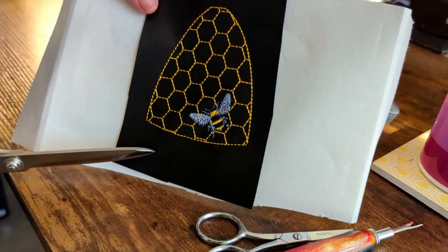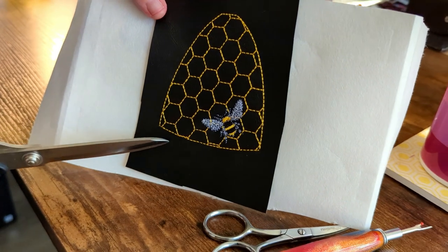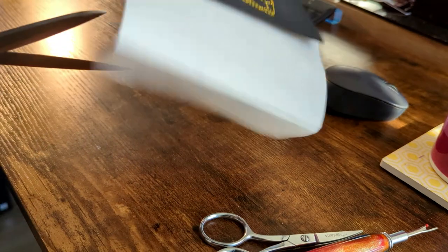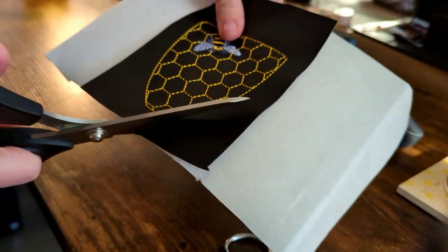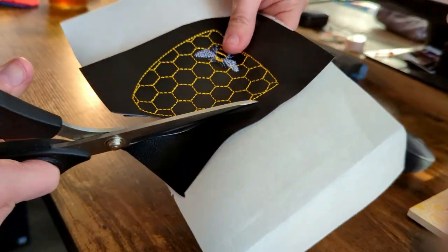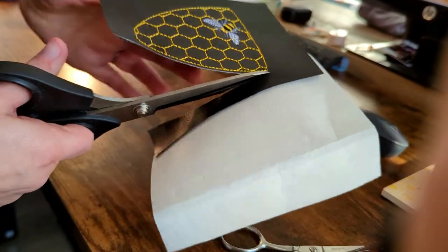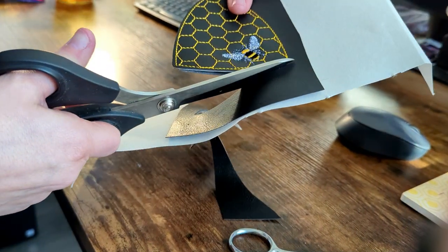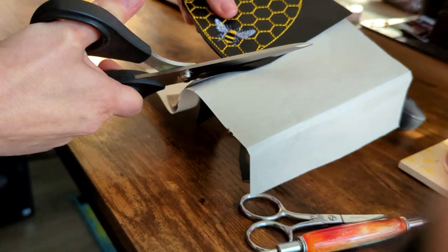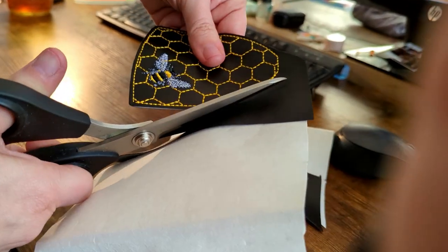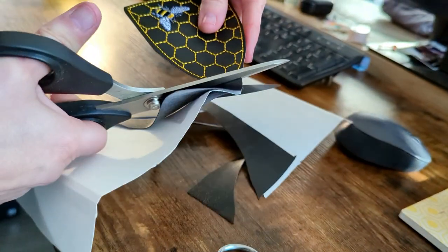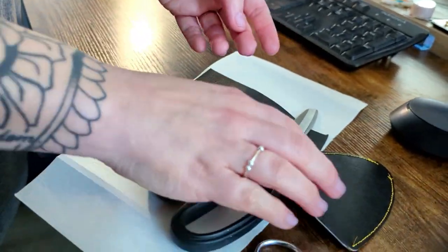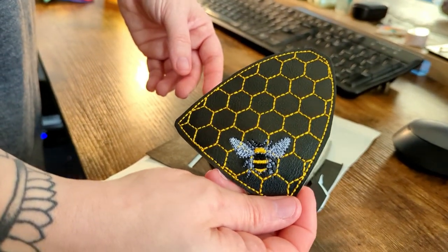The final step, you've unhooped your project and now you're going to trim around your project. Very easy. Just give yourself whatever edge you usually give yourself when you trim around your projects. Maybe an eighth of an inch. And there you have it.